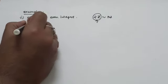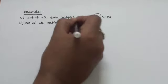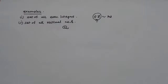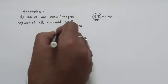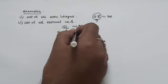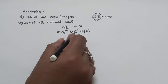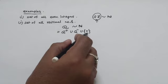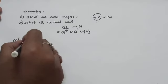The set of all rational numbers, that is Q, is also an example of a countable set. To give you a flavor of how Q is equivalent with N: Q is nothing but Q+ union Q- union the singleton set {0}, that is the set of all positive rationals union the set of all negative rationals union {0}.